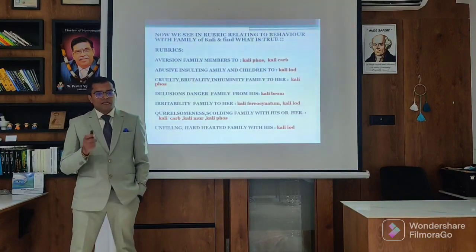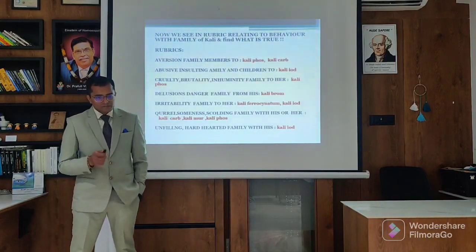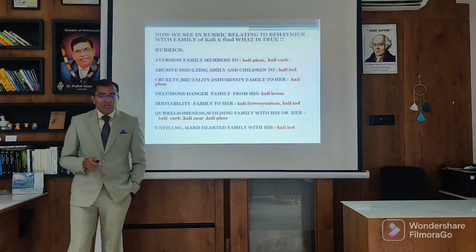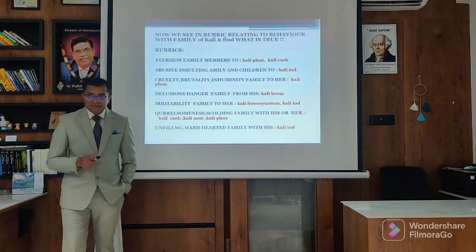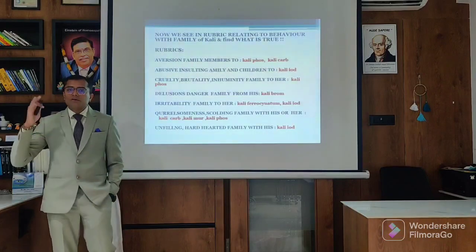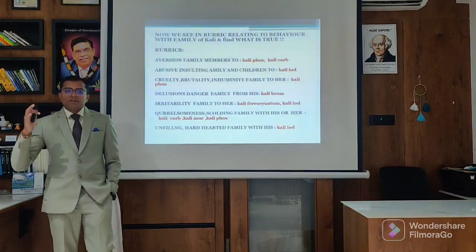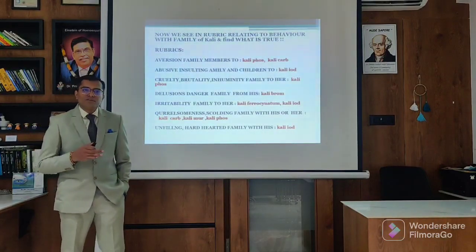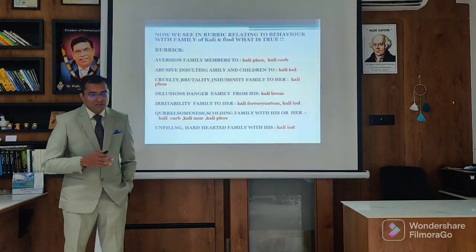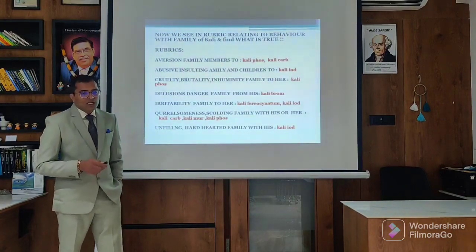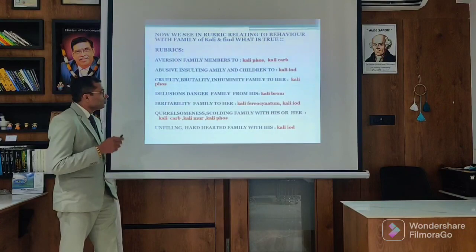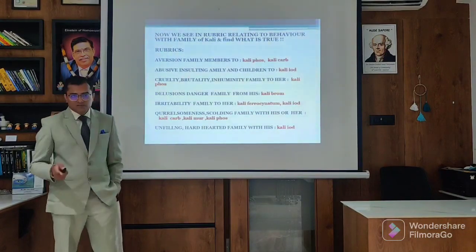In that different picture we have aversion to family members - we have Kali Phos and Kali Carb. The children abusing the families in a very orthodox family - the children are very mischievous and abusing the family. This is Kali having cruelty, brutality, inhumanity to her family. This is Kali Phos.